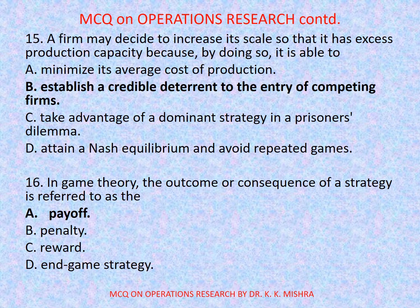Question number 15: A firm may decide to increase its scale so that it has excess production capacity, because by doing so it is able to — options are: a) minimize its average cost of production, b) establish a credible deterrent to the entry of competing firms, c) take advantage of a dominant strategy in prisoner's dilemma, d) attain a Nash equilibrium and avoid repeated games. Correct option is b) establish a credible deterrent to the entry of competing firms.